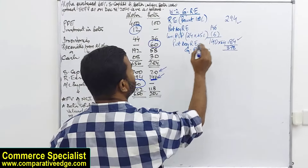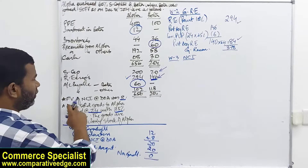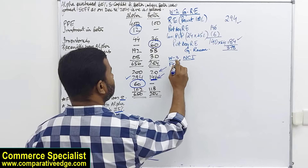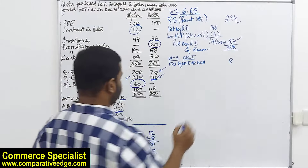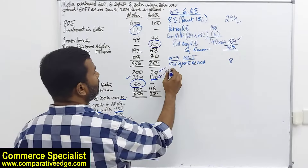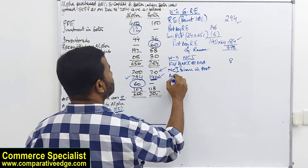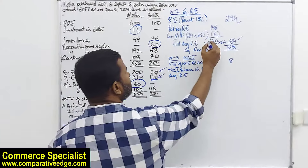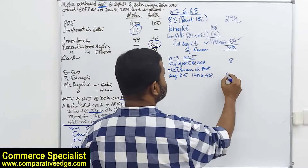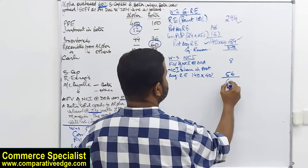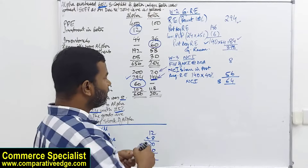Working three: NCI. Fair value of NCI at date of acquisition is 8. NCI share in post-acquisition retained earnings: post-acquisition retained earnings is 140; NCI share is 40 percent — since parent has 60 percent — giving 56. Total NCI: 8 plus 56 equals 64. This NCI of 64 enters the consolidated statement of financial position.